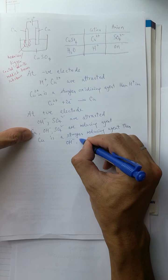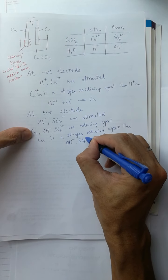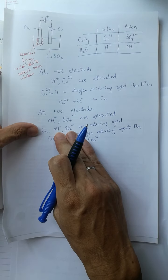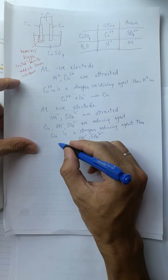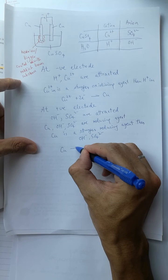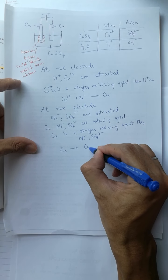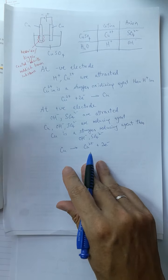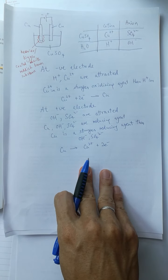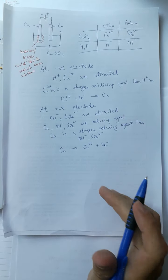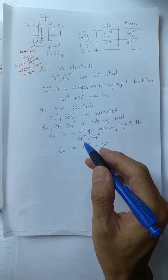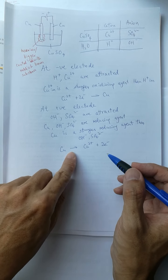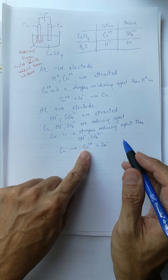So, as a result, it is not the hydroxide ion that loses electrons, but the copper electrode that loses electrons, forming Cu²⁺ ions. The copper metal is converted to Cu²⁺ ions.